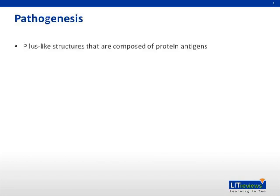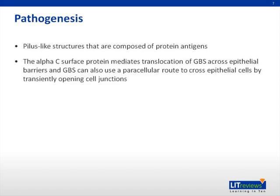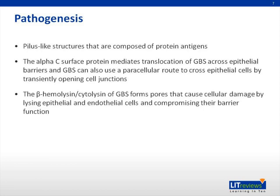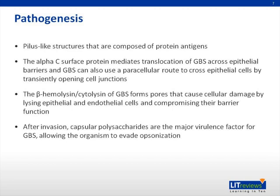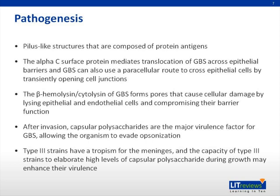Group B streptococci have pilus-like structures composed of protein antigens. The alpha-C surface protein mediates translocation of GBS across epithelial barriers, and GBS can also use a paracellular route to cross epithelial cells by transiently opening cell junctions. The beta hemolysis of GBS forms pores that cause cellular damage by lysing epithelial and endothelial cells, compromising barrier function. After invasion, capsular polysaccharides are the major virulence factor, allowing the organism to evade opsonization. Type III strains have a tropism for the meninges, and their capacity to elaborate high levels of capsular polysaccharide may enhance their virulence.